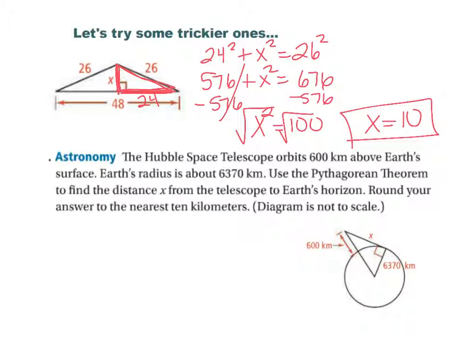So let's look at this next one. It says the Hubble Space Telescope orbits 600 kilometers above the Earth's surface. So right here, you can see here's the Earth's surface, and the Hubble telescope is out here, 600 kilometers. Now, the Earth's radius, which they show over here, is 6370. Okay, obviously, this is not drawn to scale. It says use the Pythagorean theorem to find the distance x from the telescope to the Earth's horizon. So it's like looking through at the horizon right here on the edge of the Earth. Round your answer to the nearest 10 kilometers. Okay, so I'm looking for this leg. So I know it's going to be like that leg squared plus this leg squared, which I know.